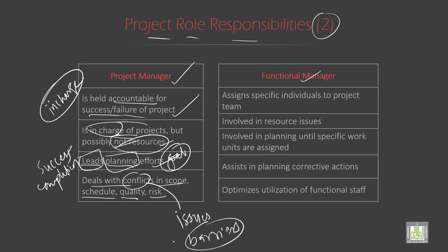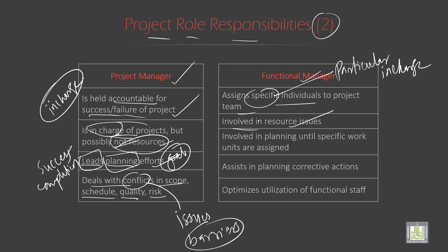The functional manager assigns specific individuals to the project team — specific means particular, you are put in charge. He is also involved in resource issues, so he can solve whether there is any problem.